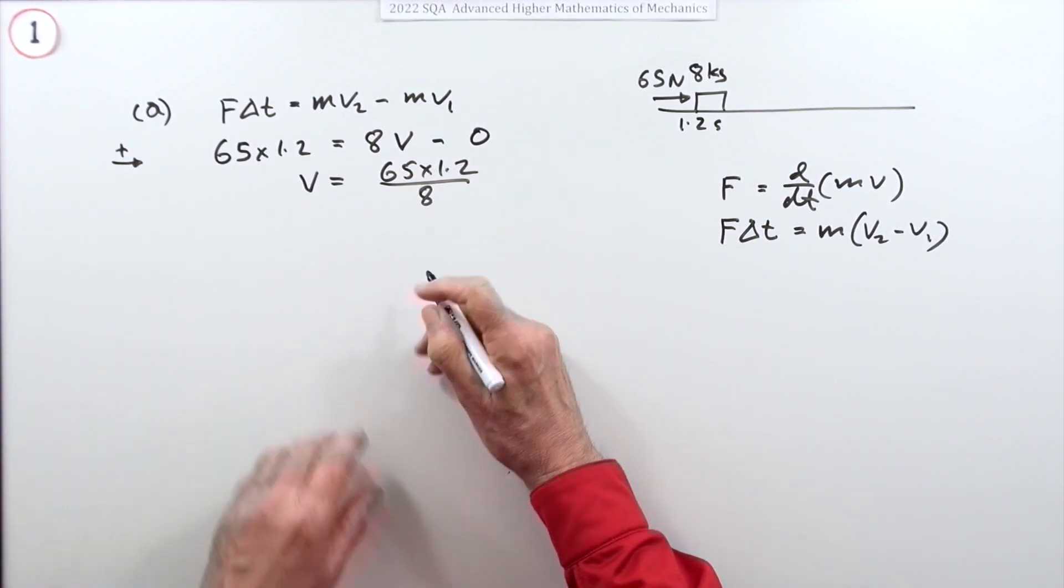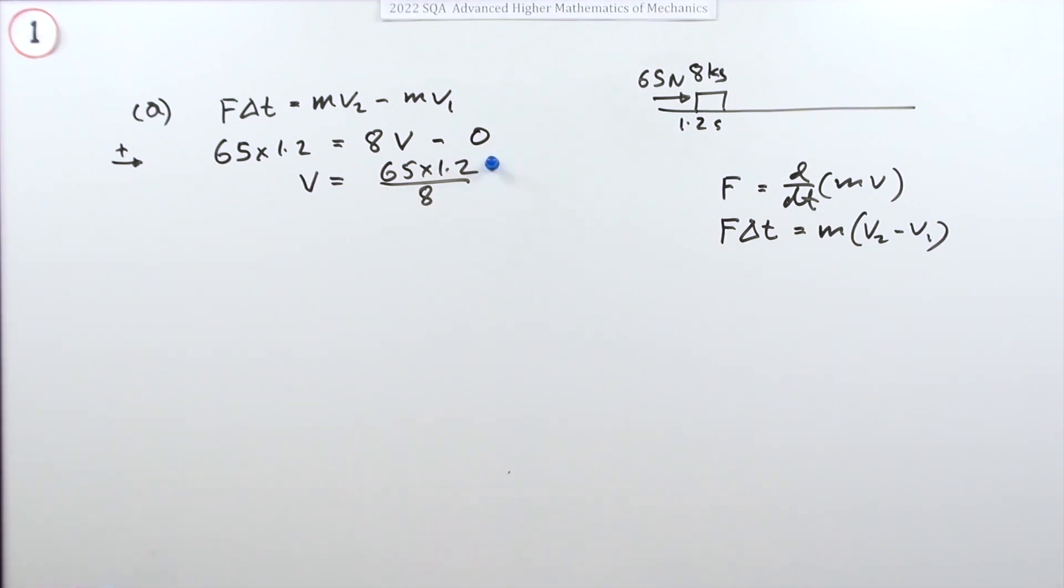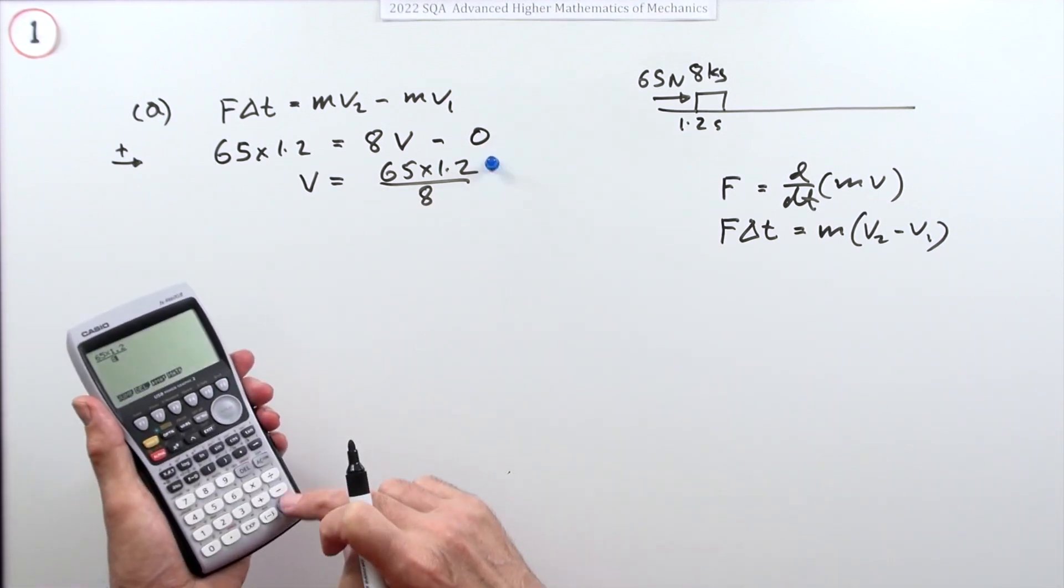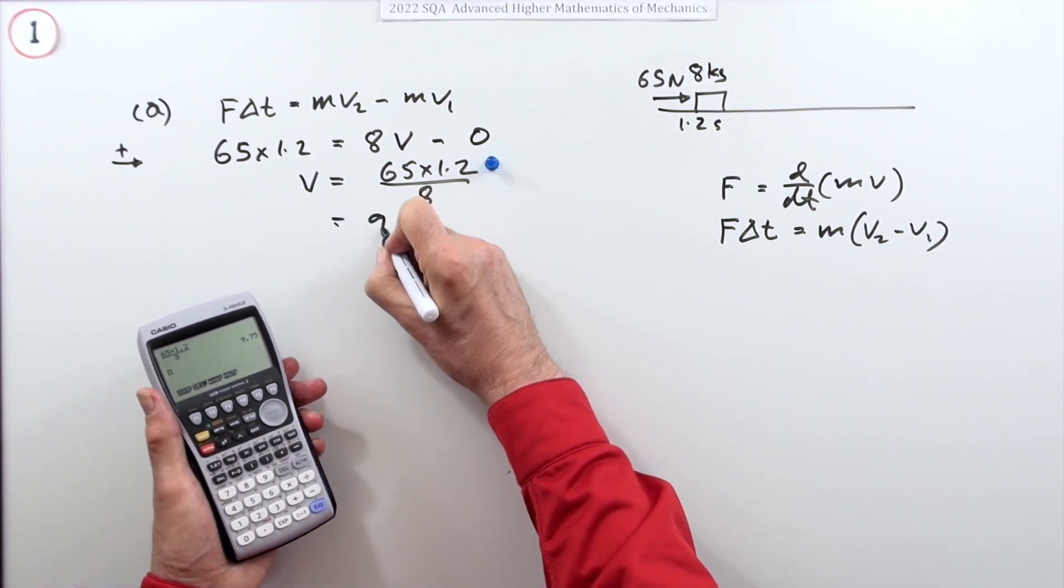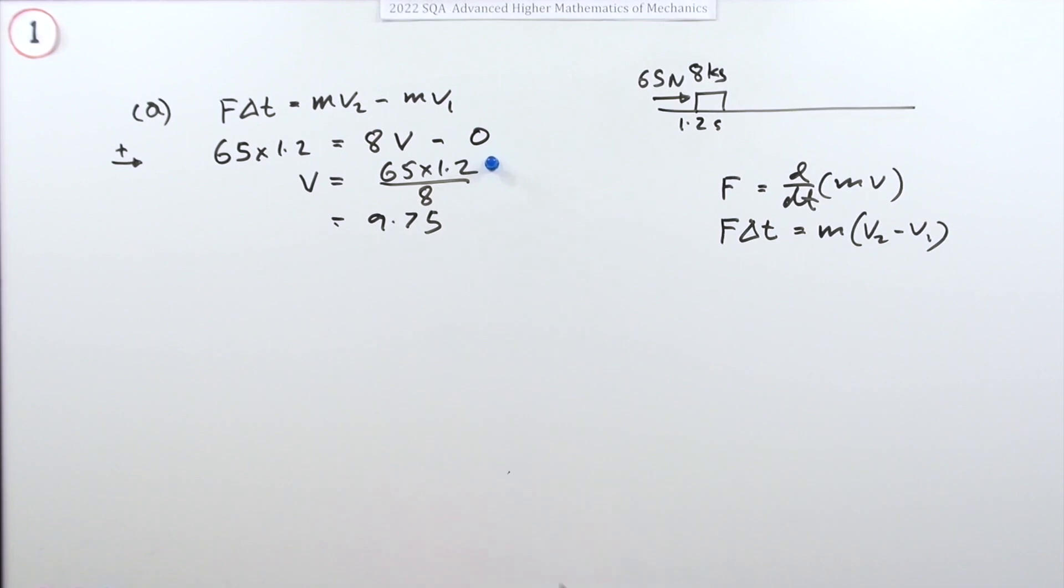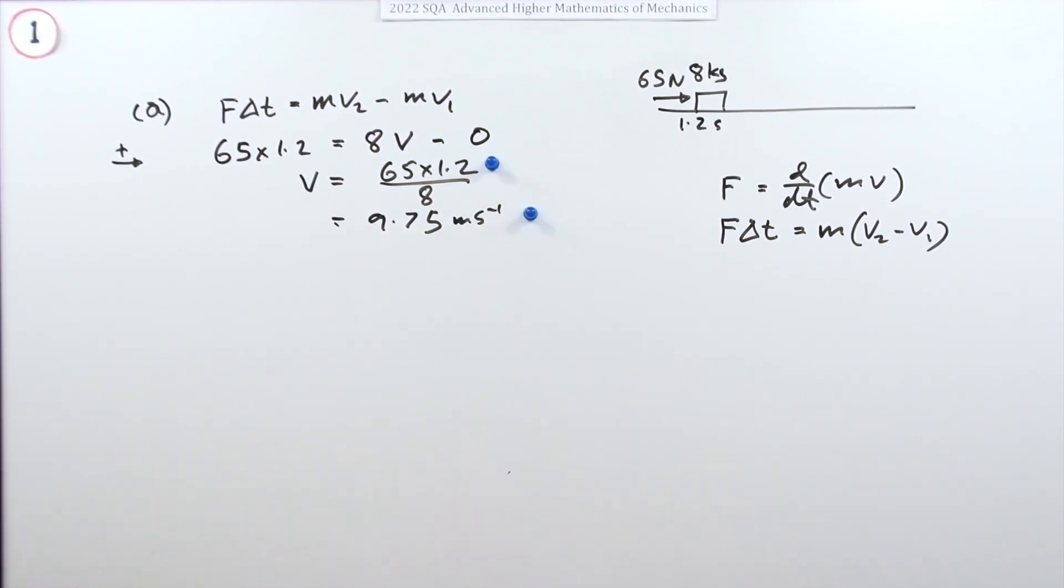Because the rest of the equation would just say the velocity would be 65 times 1.2 upon 8. So I'll put that mark there maybe, and then pressing the buttons you get 9.75 meters per second for the second mark.